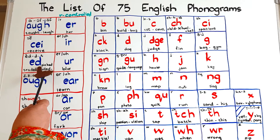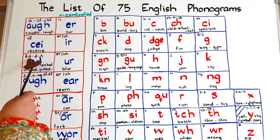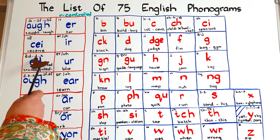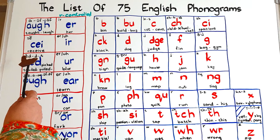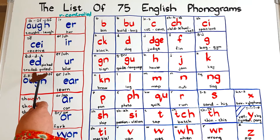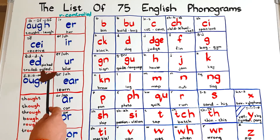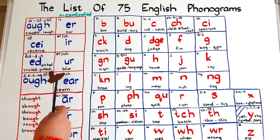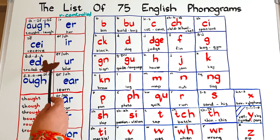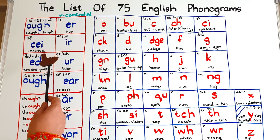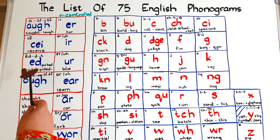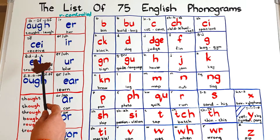You can pronounce the ED phonogram three ways: 'id', simply 'd', or simply 't'. The 'id' pronunciation is as in 'traded' or 'wanted'. The 'd' pronunciation is as in 'pulled' or 'called'. The 't' pronunciation is as in 'picked' or 'stopped'. If you want to know the rule for when we pronounce each way, the link is in the description box.